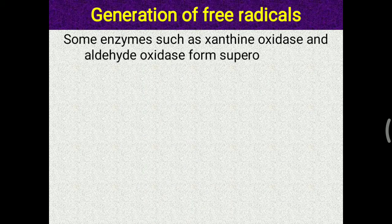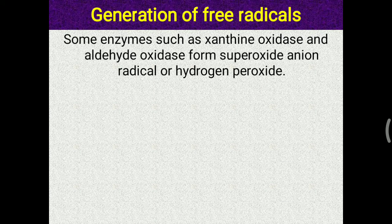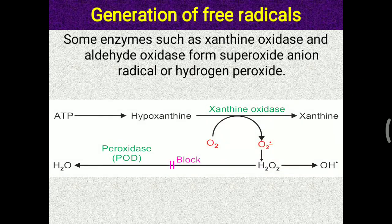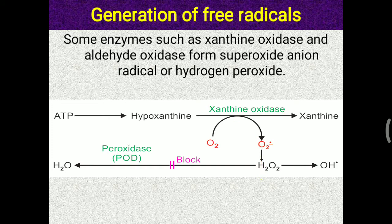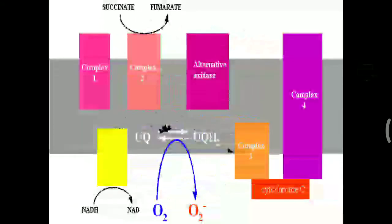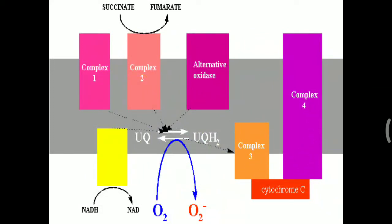Some enzymes such as xanthine oxidase and aldehyde oxidase form superoxide anion radical or hydrogen peroxide — another important site for free radical generation. Xanthine oxidase is involved in the conversion of purines into xanthine and uric acid, but H2O2 is generated during that process. This is another site of free radical generation, in addition to electron leakage from the electron transport chain.